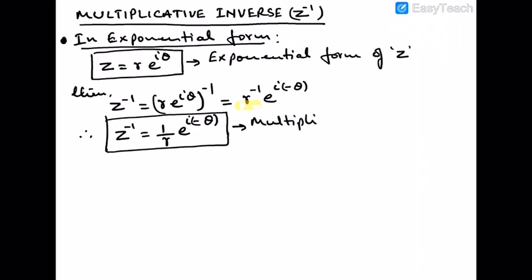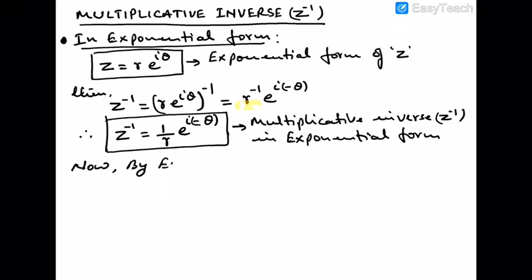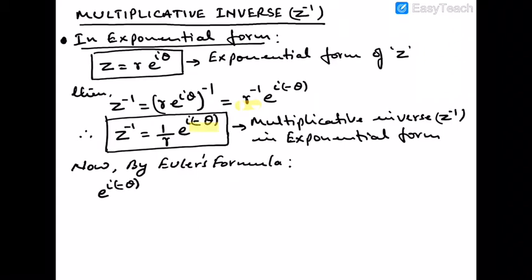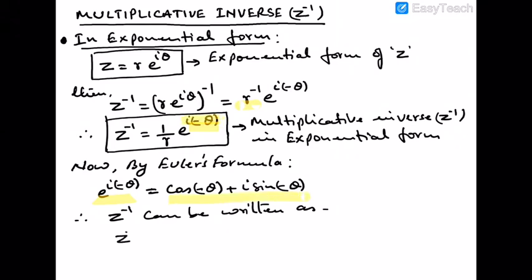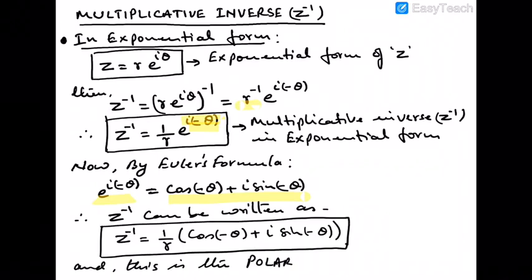This is the multiplicative inverse of a complex number in exponential form. By the z inverse formula, we can write e^(−iθ) as cos(−θ) + i sin(−θ). Substituting this into our inverse formula gives z⁻¹ = (1/r)(cos(−θ) + i sin(−θ)), which is the polar representation of z⁻¹.